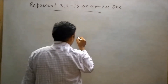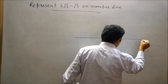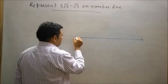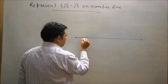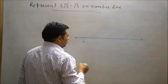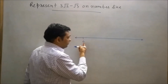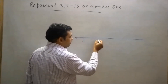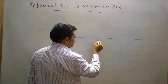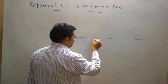First of all I will draw a number line. Let's say this is our initial point O. Now move 1 unit distance to the right side of initial point O. Let's say this is point 1, and let's say this point is A.